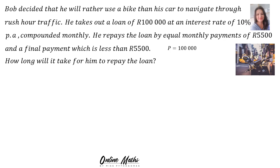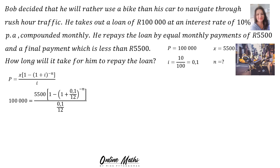Now let's start with a summary. P is 100,000 Rand. X, the regular payments, is 5,500. I is the interest rate — 10%, so 0.1. And N is what we're looking for: how long will it take for him to repay the loan? We work this out with the present value formula.